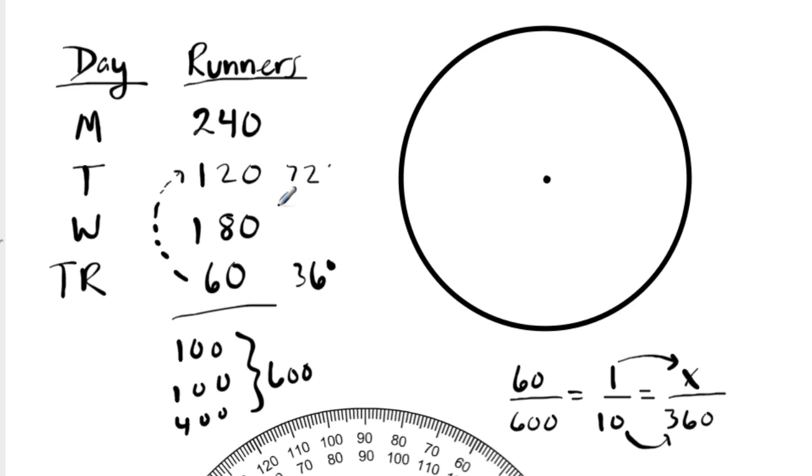And I can keep going, because now, to get to Wednesday, I add another group of 60. This is 3 groups of 60 on Wednesday. So it's 3 groups of 36 degrees. And what's that? Let's write it over here. 36 times 3. Well, 3 times 3 is 9, 3 times 6 is 18. Put them together, we get 108 degrees.